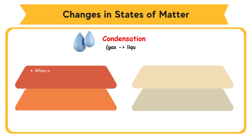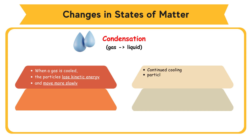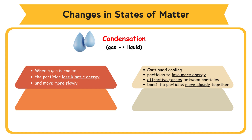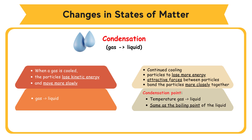Condensation. When a gas is cooled, the particles lose kinetic energy and move more slowly. Continued cooling will cause the particles to lose more energy and allow the formation of attractive forces between particles, to bond the particles more closely together. At this point, the gas starts to become a liquid. The temperature at which a gas changes to a liquid is called the condensation point. The condensation point is the same as the boiling point of the liquid.